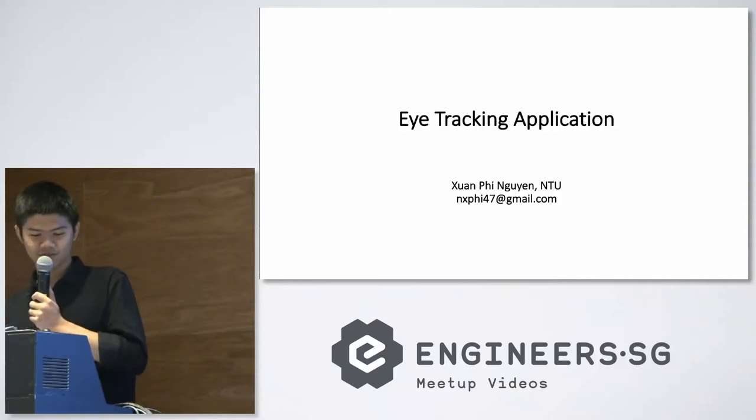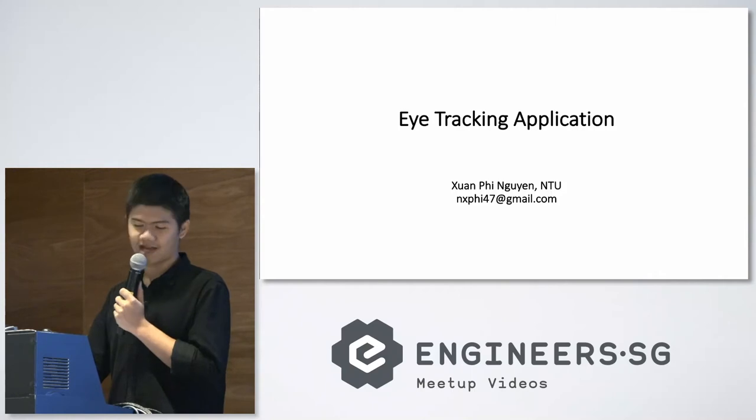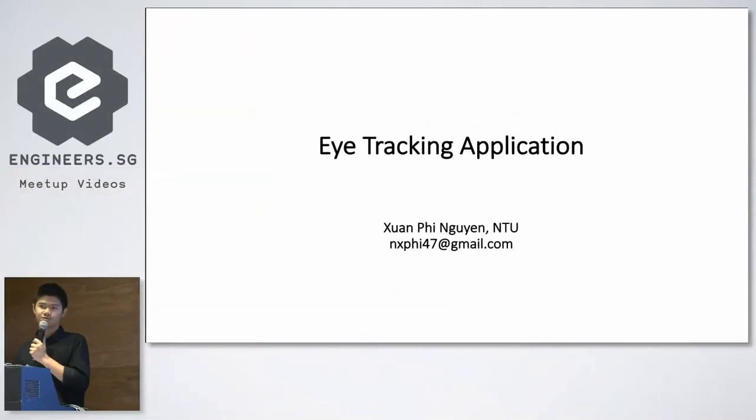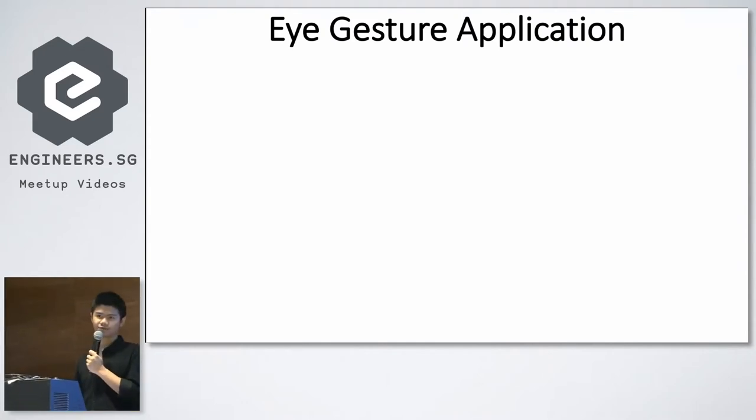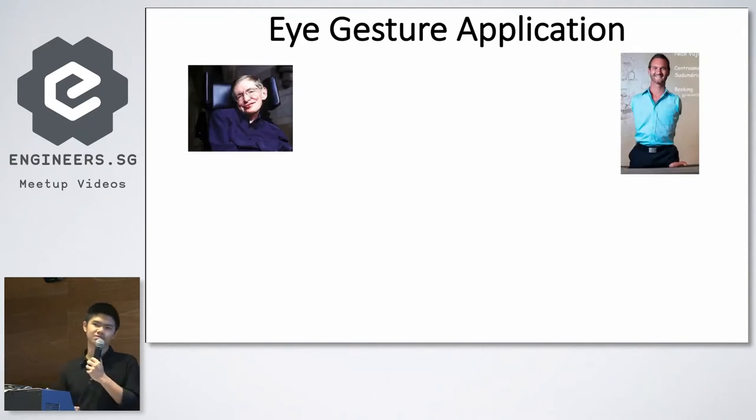I'm from Nanyang Technological University. Today I'm going to show you my project about an eye tracking application using deep learning. The problem I'm trying to solve is addressing the difficulties of patients suffering from complete paralysis or people born with no limbs, who can basically do nothing but lie on the bed staring at the ceiling. I'm trying to help them actively control their daily activities by using their eyes, which I think is the only thing left that can move.